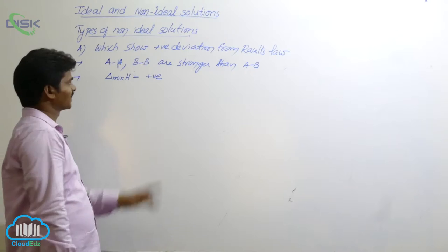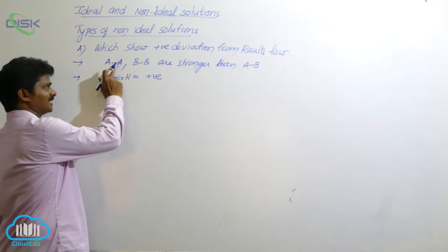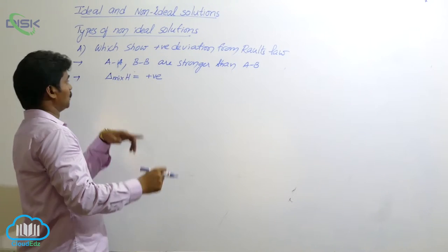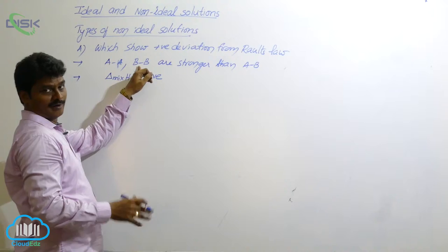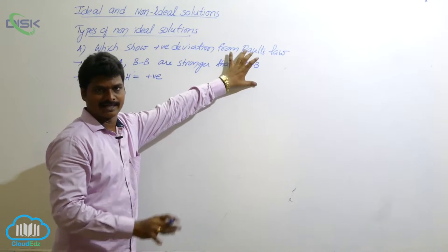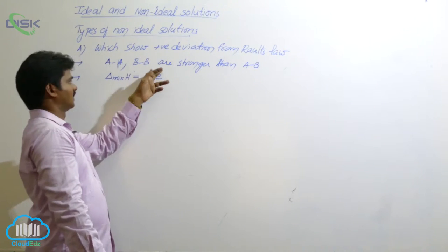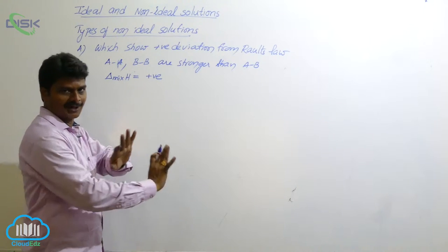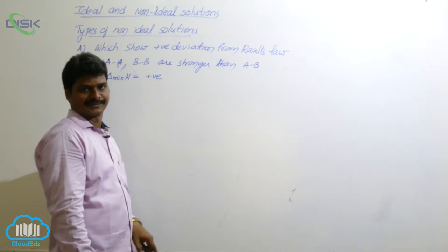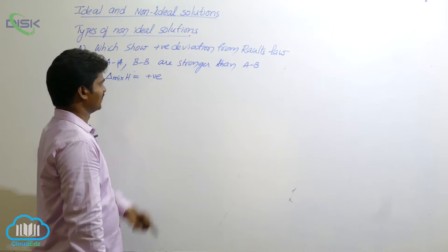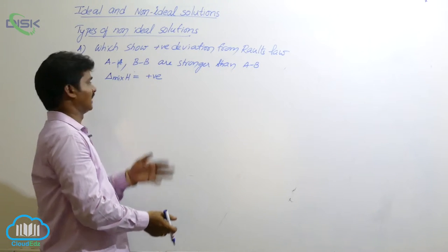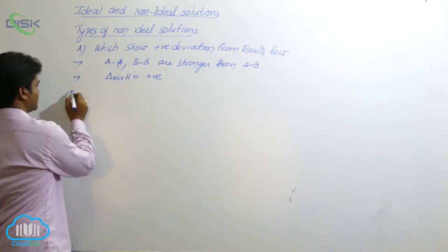Why is the enthalpy of mixing positive? Here, AA and BB bonds are strong bonds, while AB bonds are weak. The total energy required to break AA and BB bonds is more than the energy released in forming AB bonds. So energy is required overall — that means it is an endothermic process. During the formation of this non-ideal solution, enthalpy of mixing is positive.